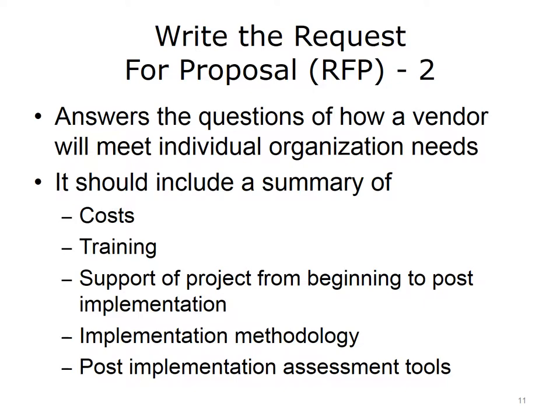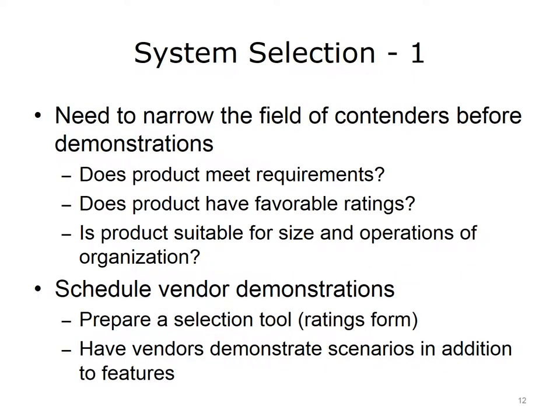Since the RFP and its response usually leads to a legally binding contract, it is important that the final document is accurate and complete to protect both the organization and the vendor. Once all responses to the RFP have been received, the organization can begin the process of selecting an EHR system. The first step is to narrow the field of contenders to a short list, because it is impractical to compare a large number of EHRs. Using a robust model to narrow the field of vendors will save both time and resources.